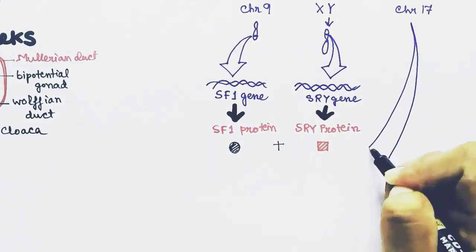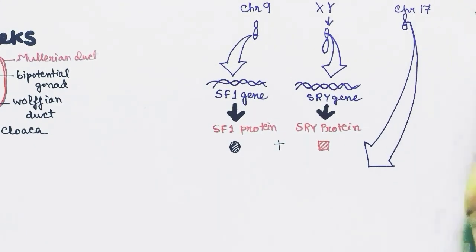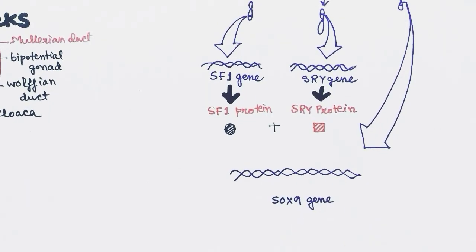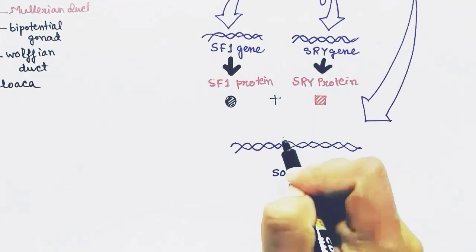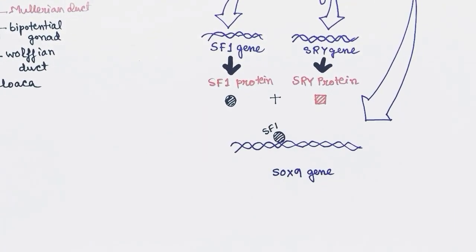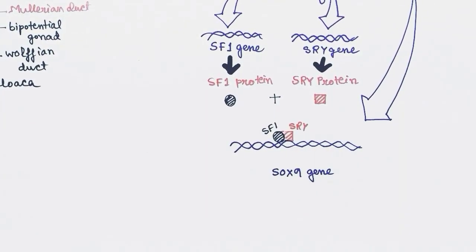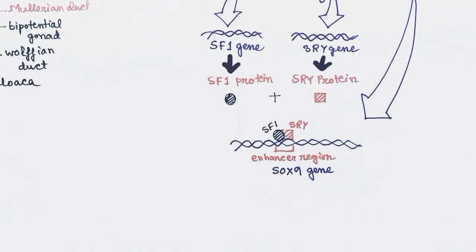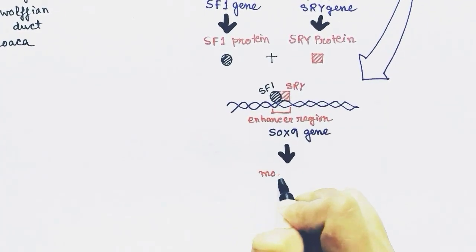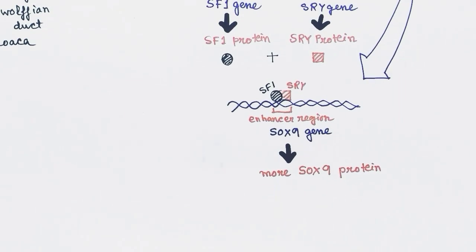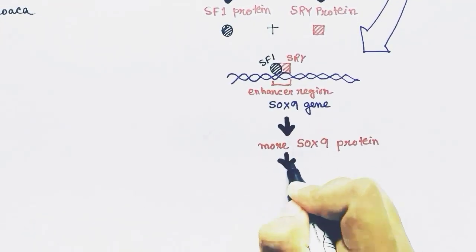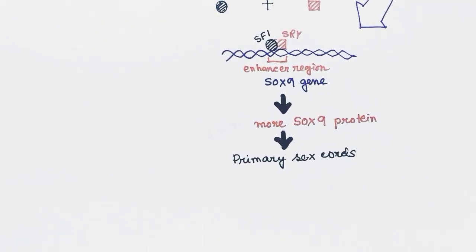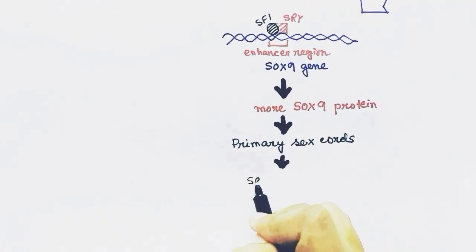On chromosome number 17, the gene present is the SOX9 gene. The complex made by SF1 and SRY binds to the SOX9 gene at the enhancer region, which enhances the production of SOX9 protein. This increased SOX9 protein will develop primary sex cords, which will form seminiferous tubules in the future.